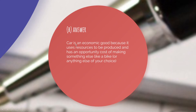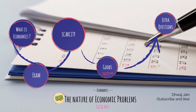For Part B: a car is an economic good because it uses resources to be produced and has an opportunity cost of making something else, like a bike. The key points for full four marks are: it uses resources to be produced, it has an opportunity cost, and you should give an example of what else could be made with those resources.